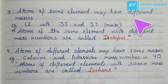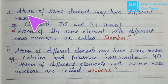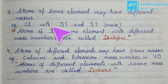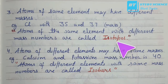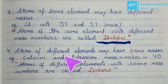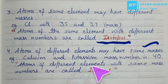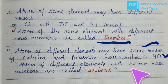Third, atoms of the same element may have different masses — for example, chlorine has atomic masses of 35 and 37. Atoms of the same element with different mass numbers are called isotopes. Fourth, atoms of different elements may have the same mass — for example, calcium and potassium both have mass number 40. Atoms of different elements with the same mass number are called isobars.